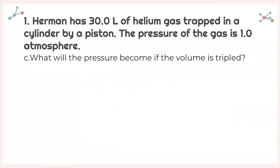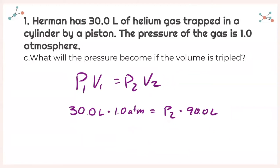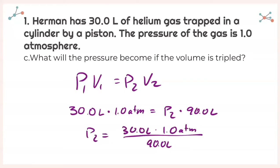For part C, it asks: what will the pressure become if the volume is tripled? Writing down my equation and plugging in what I was given. The only thing changing is V2 — it's tripled. Solving for P2: 30.0 times 1.0 atmospheres divided by 90.0 liters, I end up getting 0.3 atmospheres.